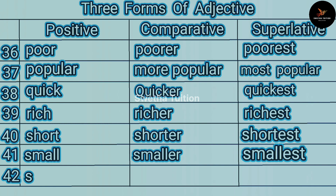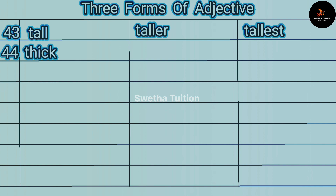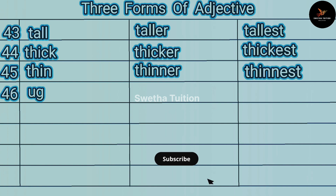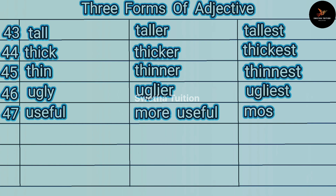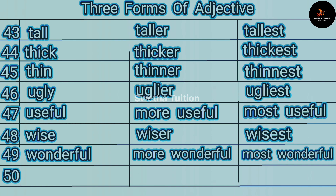Number forty-two: strong, stronger, strongest. Number forty-three: tall, taller, tallest. Number forty-four: thick, thicker, thickest. Number forty-five: thin, thinner, thinnest. Number forty-six: ugly, uglier, ugliest. Number forty-seven: useful, more useful, most useful. Number forty-eight: wise, wiser, wisest. Number forty-nine: wonderful, more wonderful, most wonderful. Number fifty: young, younger, youngest.